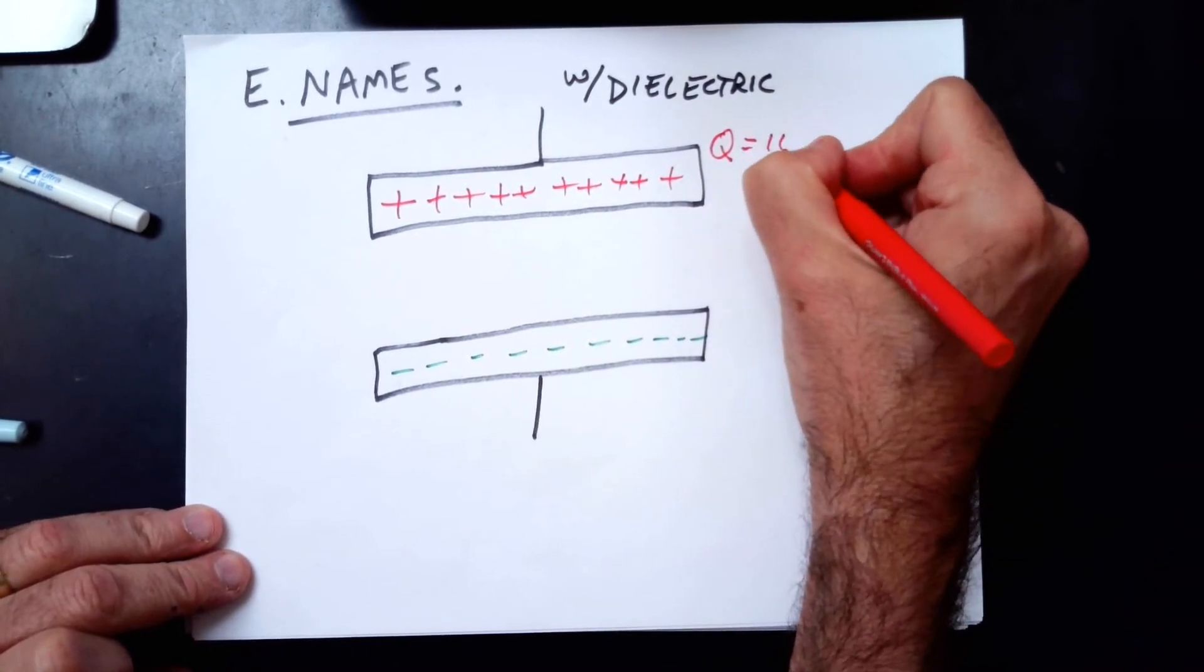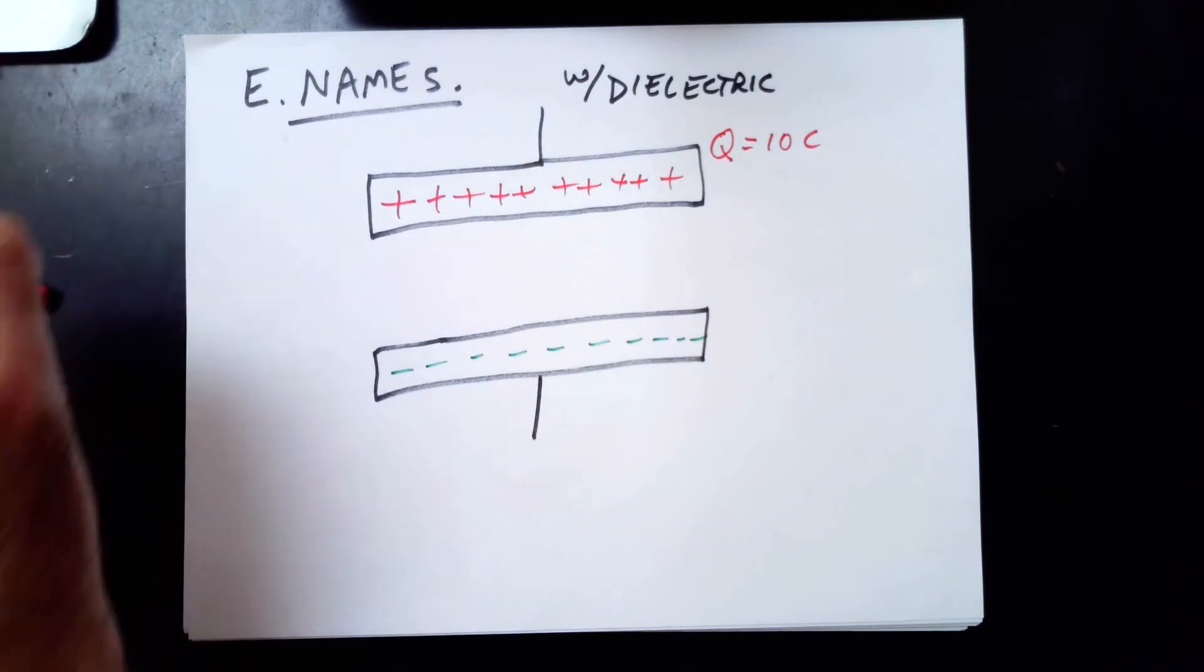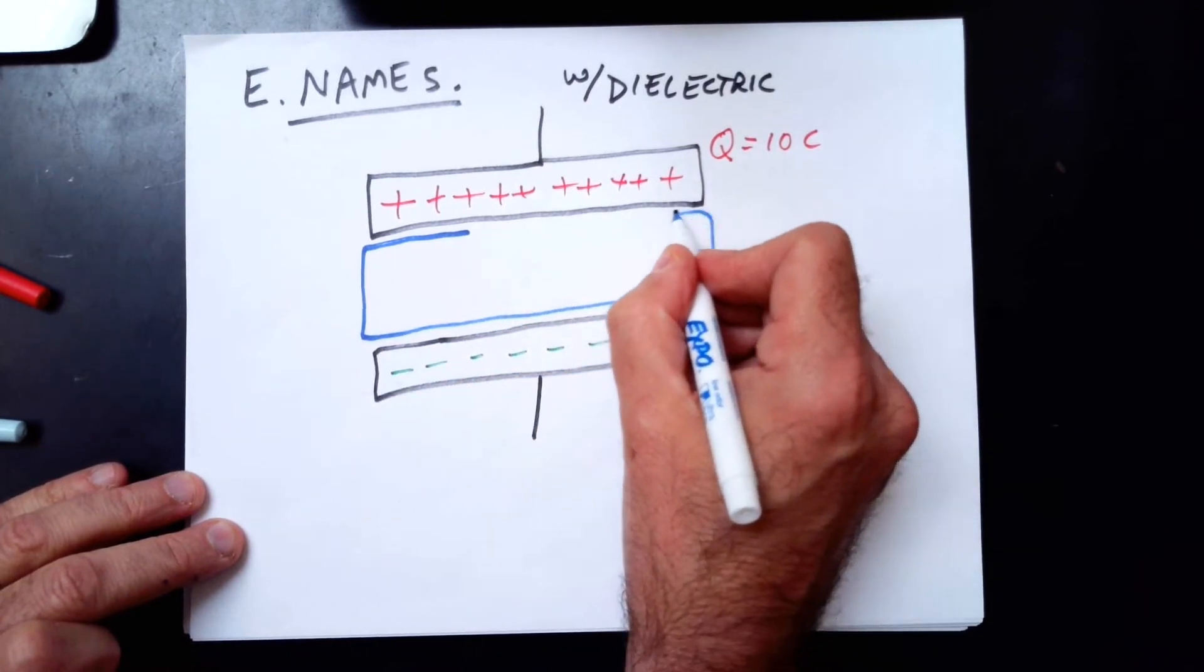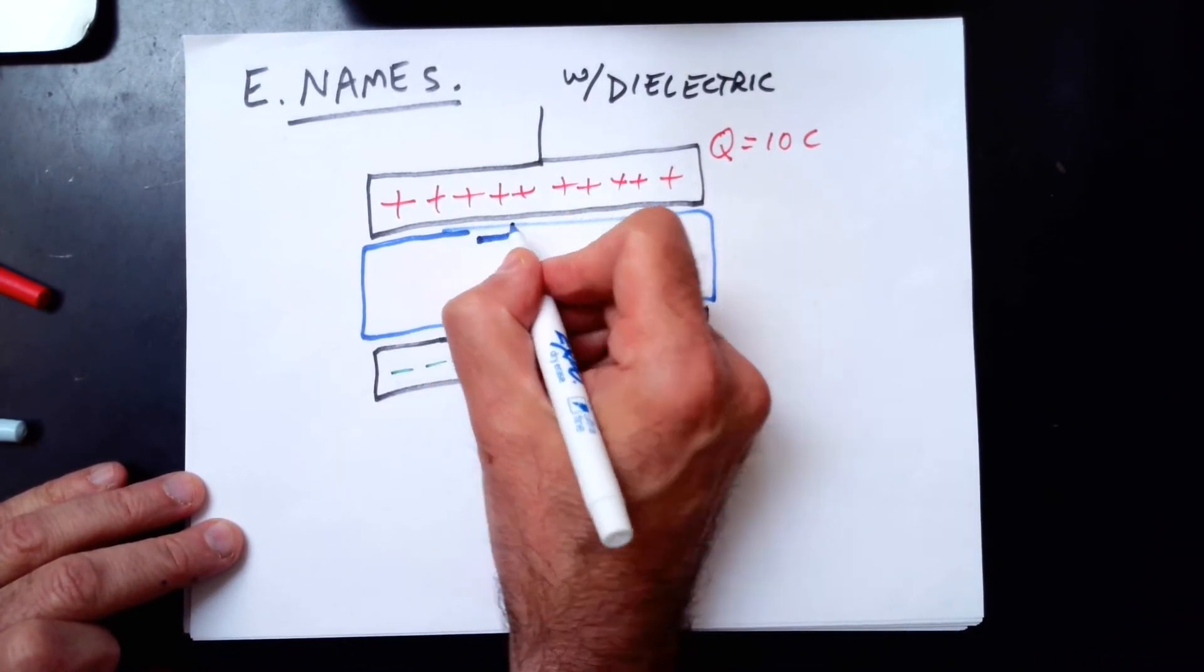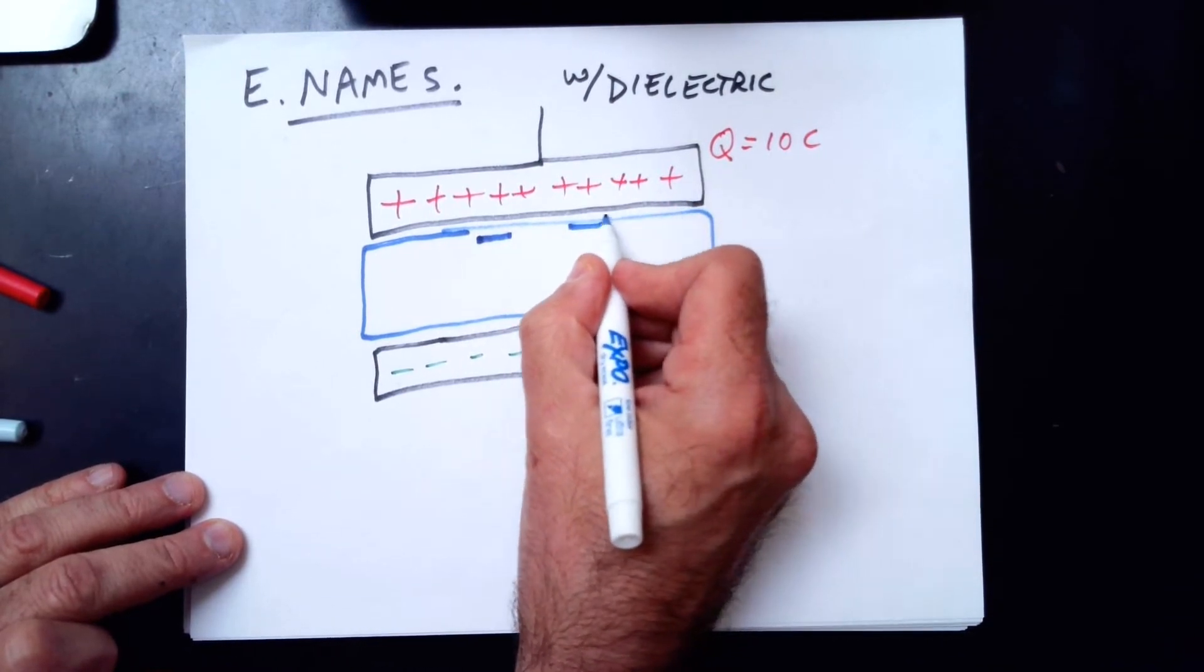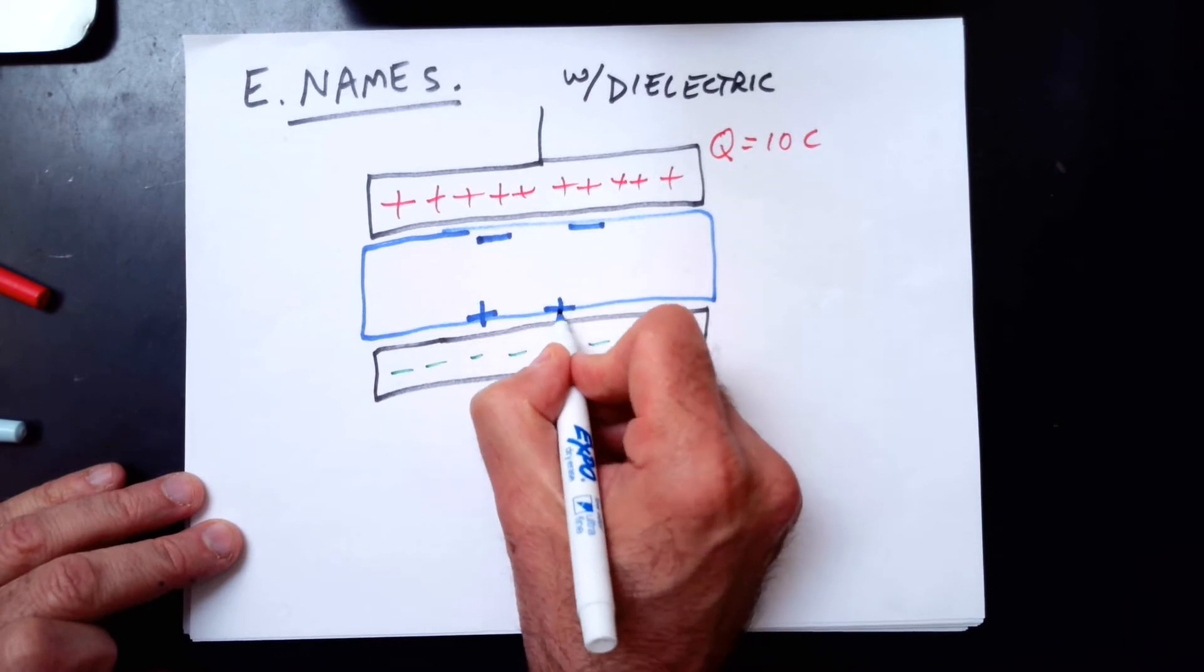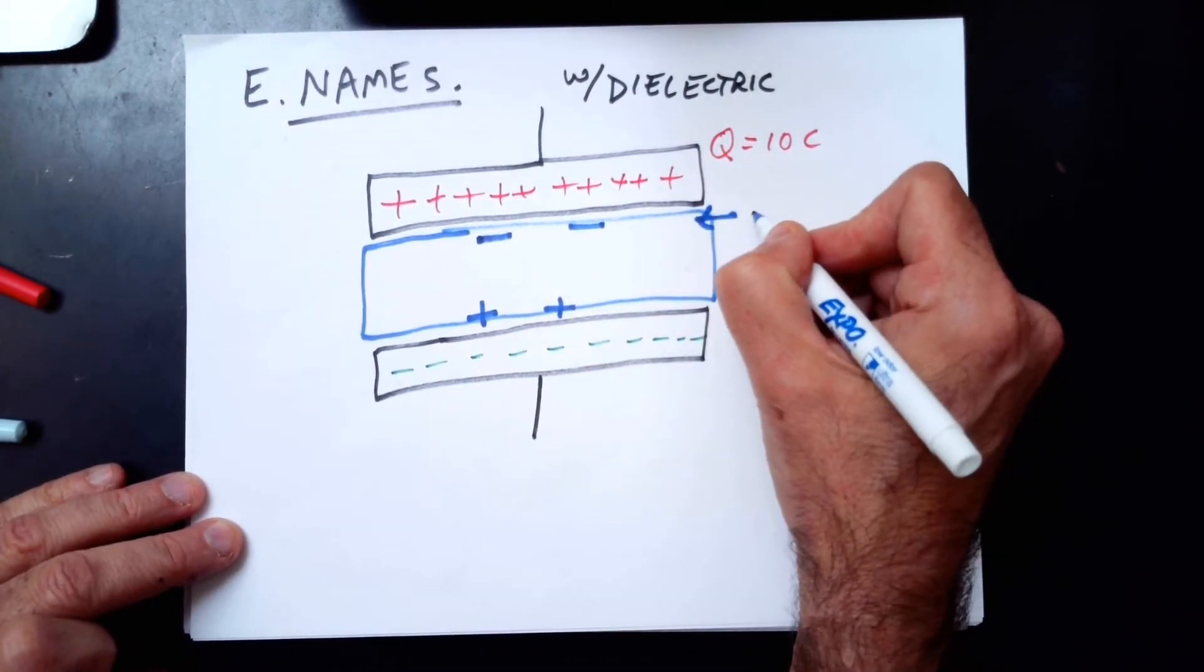This charge on the top, Q equals 10 coulombs. Charge on the bottom is negative 10 coulombs. And then in between the plates, we had a dielectric material, and we saw that we could explain what was going on by saying there's negative 2 coulombs spread all over this outer skin here and positive 2 coulombs spread all along the bottom.